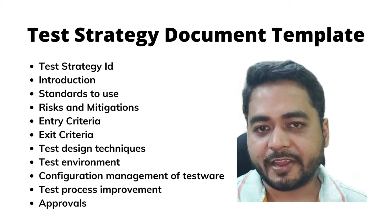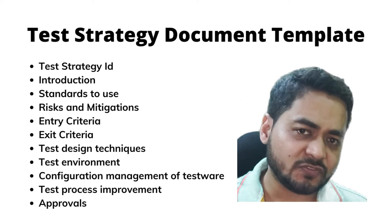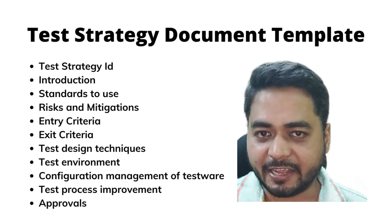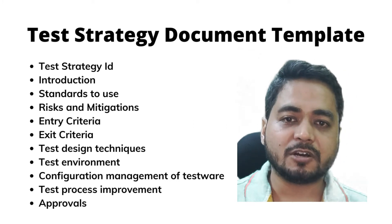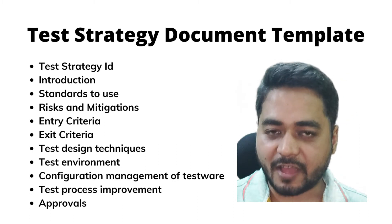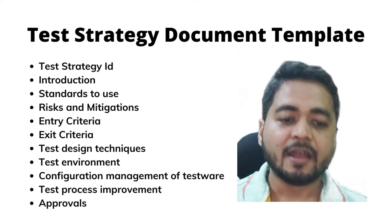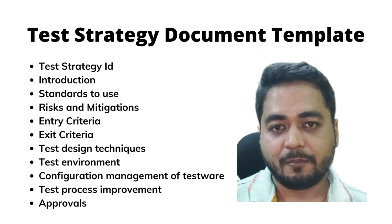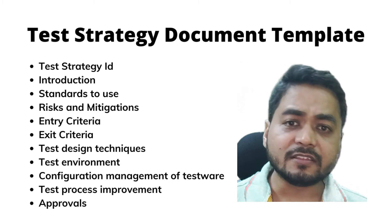Now let's understand the key fields that are part of a test strategy document. First is the strategy ID — a unique identifier that identifies the test strategy document and its various versions. Second is the introduction, which captures a brief introduction about the purpose of the document. Third is standards of use — the different guidelines that need to be followed by the testing team.